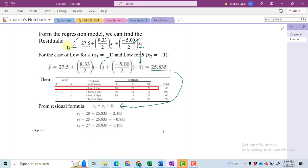So we have three experimental values when A and B both were at low levels, and those values are 28, 25, and 27. We subtracted 25.835 from all three values and we got these three residuals. Now likewise you will have to do for the second.